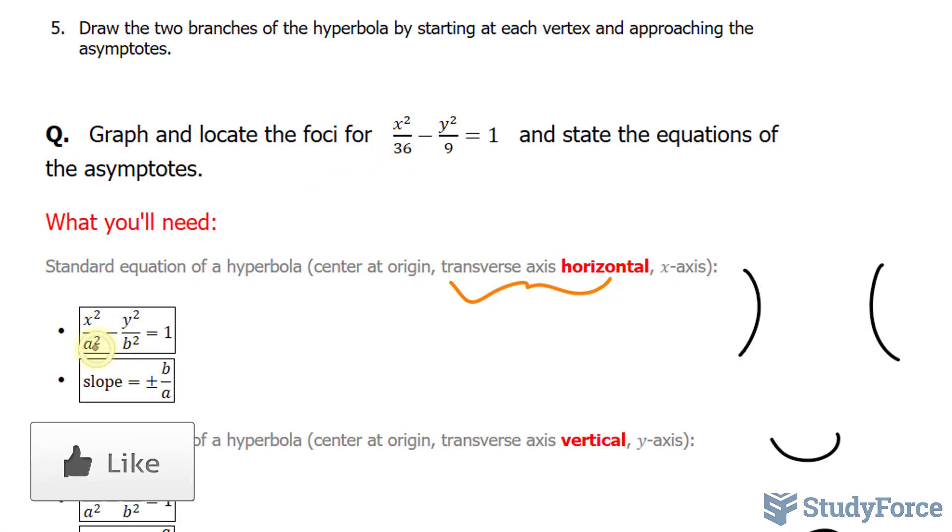So here we have 36 and that's a². So a² is equal to 36. Square rooting both sides, we end up with an a value that's plus minus 6. This actually tells us the vertices. One vertex will be at negative 6 and 0, and the other will be at positive 6 and 0.